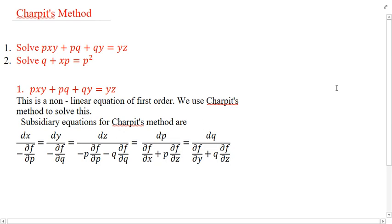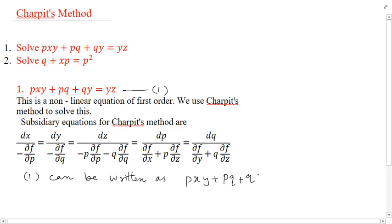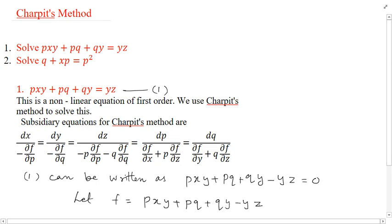To start, we find all partial derivatives. First, rewrite the equation as f equal to Pxy plus Pq plus Qy minus Yz equals 0, and take the left-hand side as f. So let f equal to Pxy plus Pq plus Qy minus Yz.